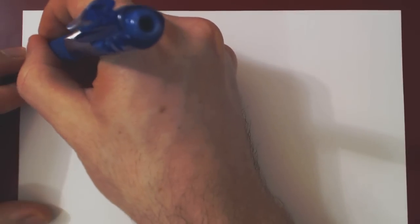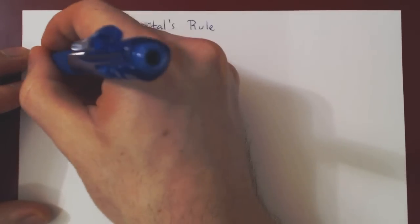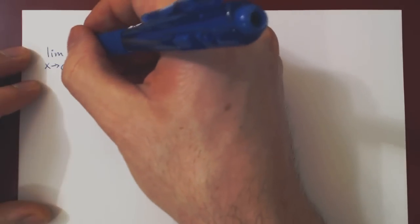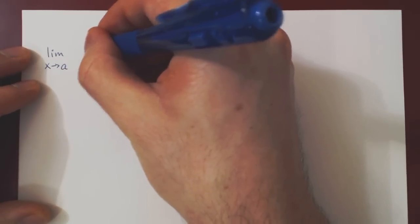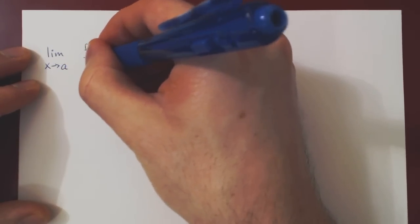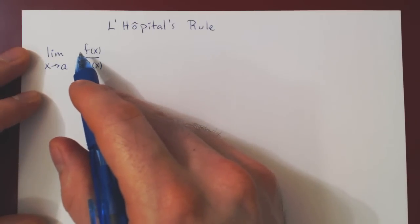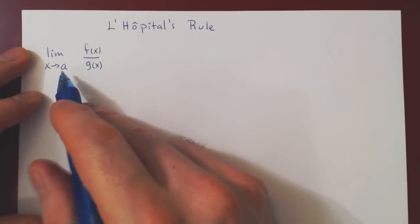Suppose we have a limit as x approaches a, and a could be any real number or even positive or negative infinity, and we have a quotient of two functions, f(x) over g(x). So we're asking quite simply what happens to the quotient f(x) over g(x) as x approaches a.